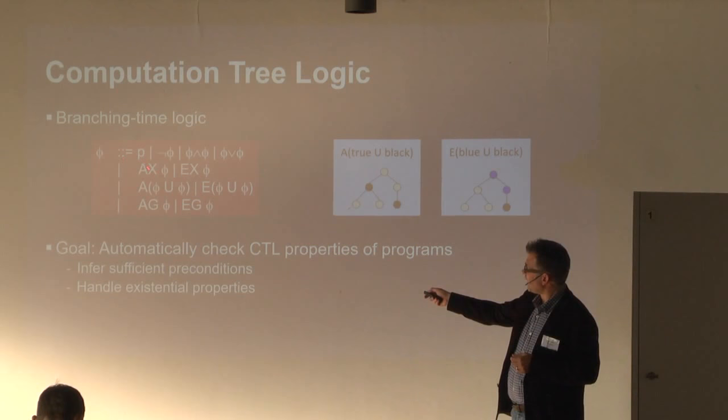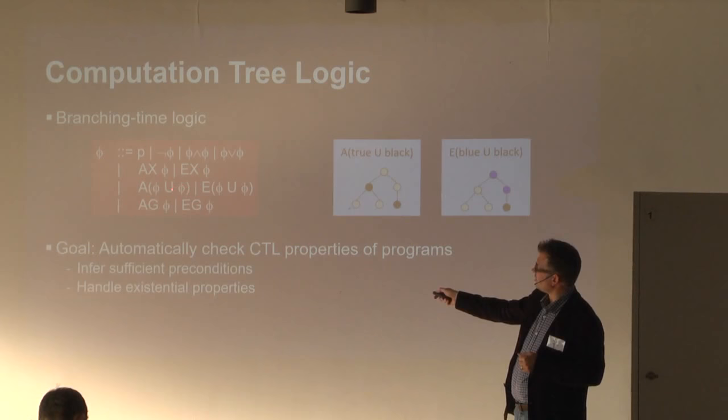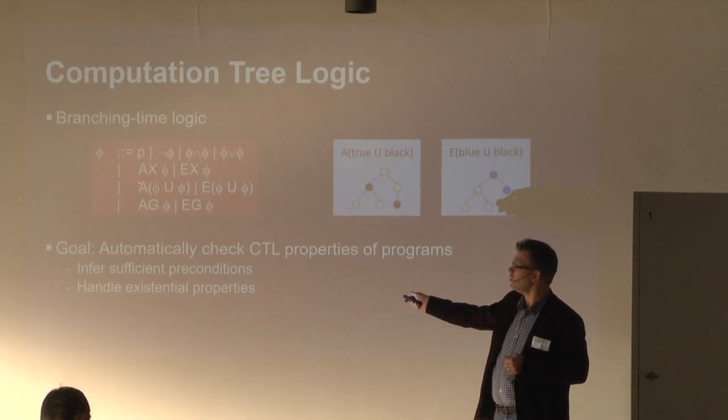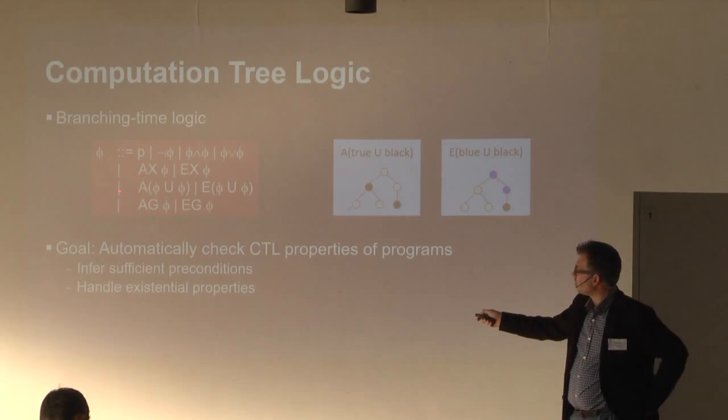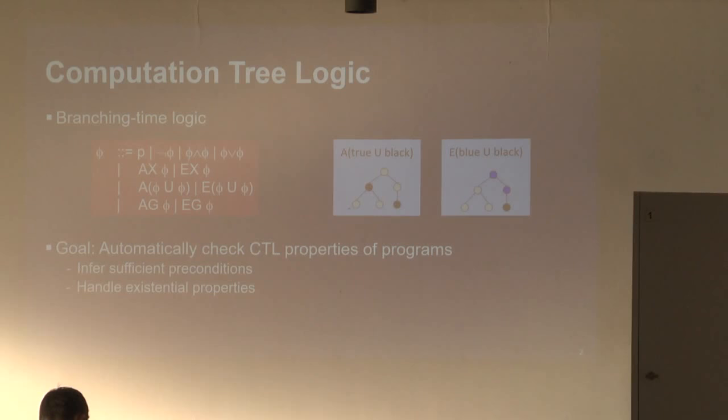We have the next operator — for all possible executions in the next state, phi is going to hold — and the equivalent existential form. We have a strong until, which says the second formula will hold eventually, and until then the first one holds, in both universal and existential form. And we have the globally or always operator that says a formula holds in all future states, again for all futures or just some of them.